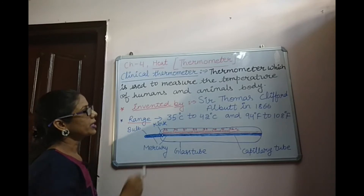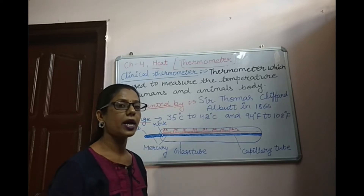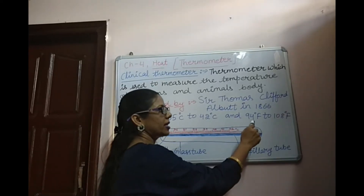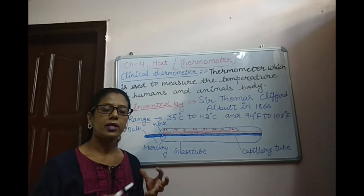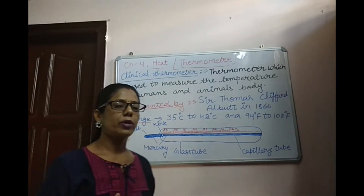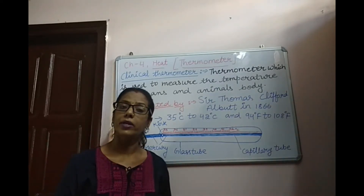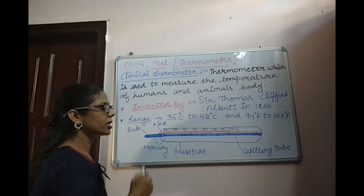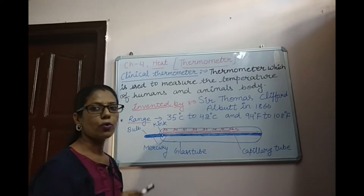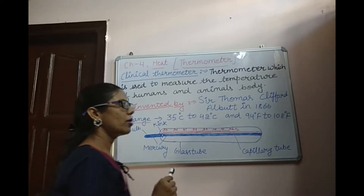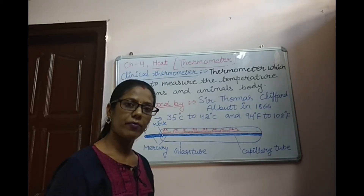The range of a Clinical Thermometer is 35 degree Celsius to 42 degree Celsius. On the Fahrenheit scale, that is 94 degree Fahrenheit to 108 degree Fahrenheit. As we have learned in the last video, there are different types of temperature scales: Celsius scale, Fahrenheit scale, and Kelvin scale.